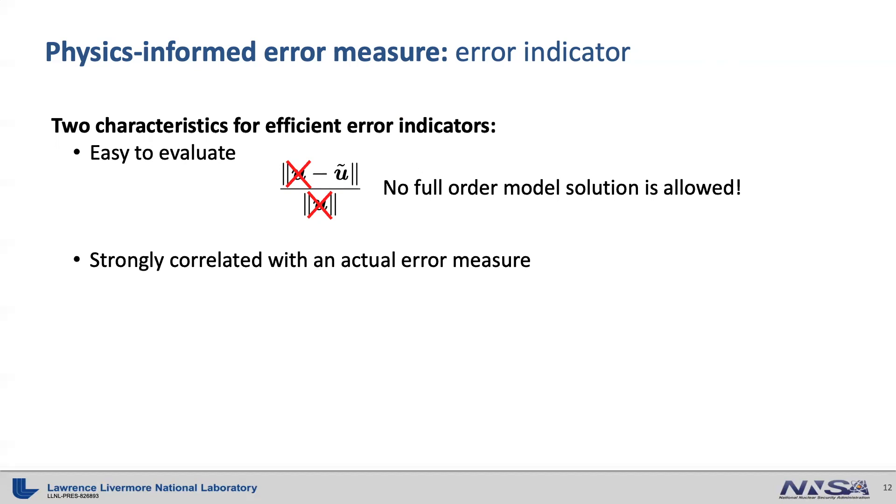Second, the error indicator must be strongly correlated with the actual error measure. For example, the error indicator value must increase as the corresponding relative error measure. But this is an ideal case. We do not always get this perfect correlation.